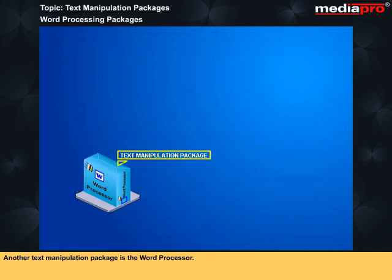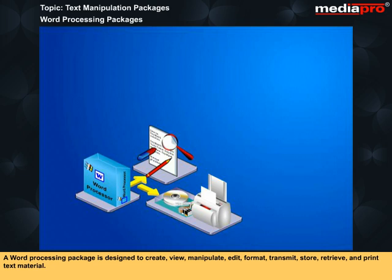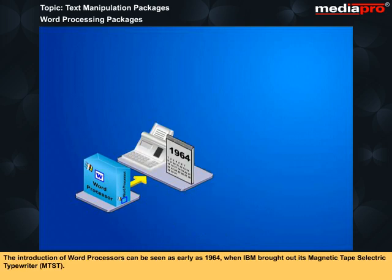Another text manipulation package is the word processor. A word processing package is designed to create, view, manipulate, edit, format, transmit, store, retrieve, and print text material. The introduction of word processors can be seen as early as 1964, when IBM brought out its Magnetic Tape Selectric Typewriter, or MTST. MTST systems were used for storing, retrieving, and printing frequently used pre-designed formats and letters.